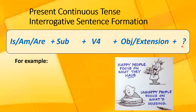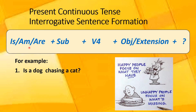Let's convert those sentences into the interrogative forms. Your affirmative sentence was: a dog is chasing a cat. You will replace the positions of the subject and the auxiliary verb. By interchanging their positions, your sentence would be converted into its interrogative form. So your sentence would be: Is a dog chasing a cat?